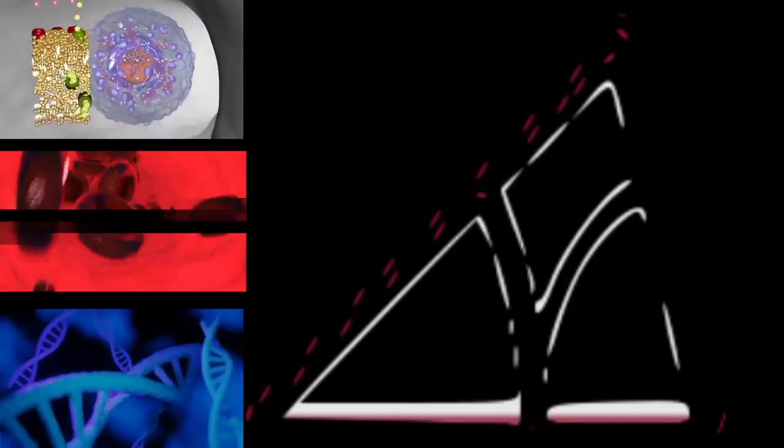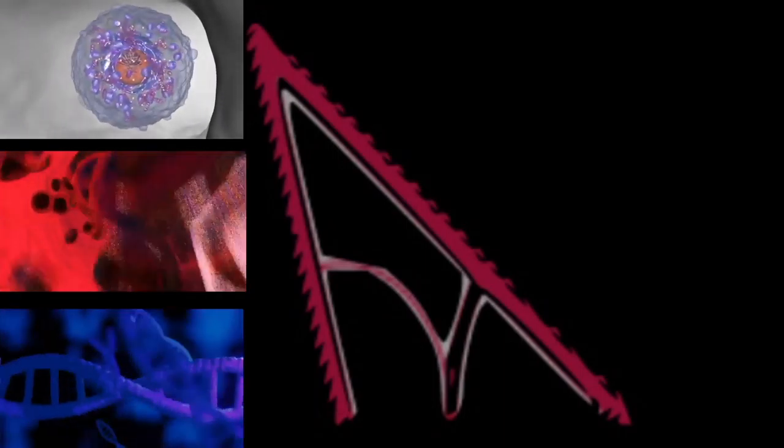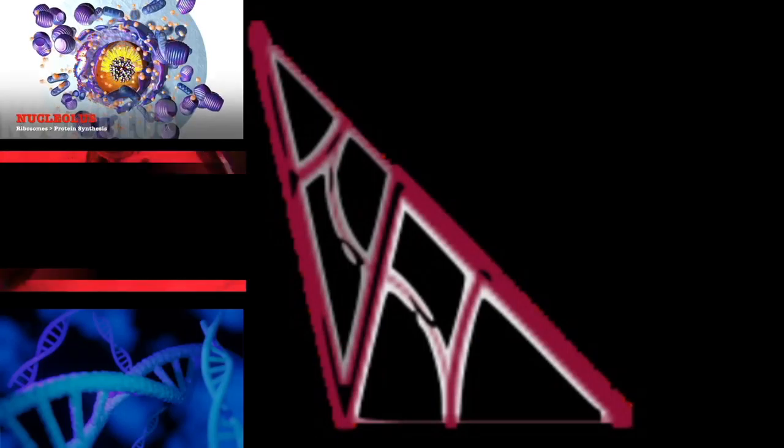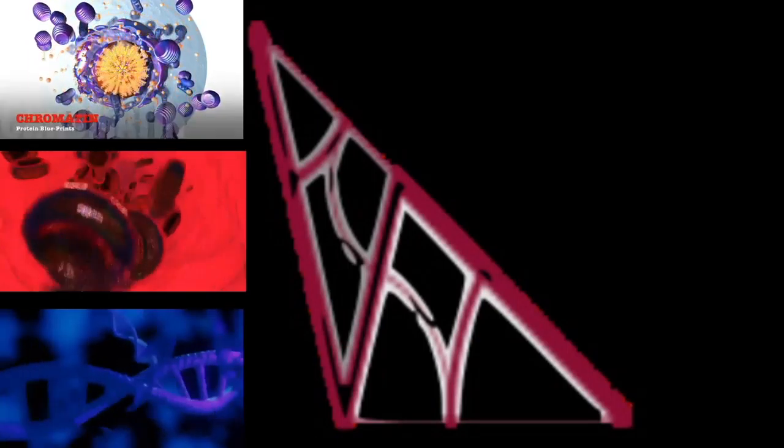DNA double-strand breaks can be repaired during interphase by two principal processes. The first process, non-homologous end-joining (NHEJ), can join the two broken ends of DNA in the G1, S, and G2 phases of interphase.